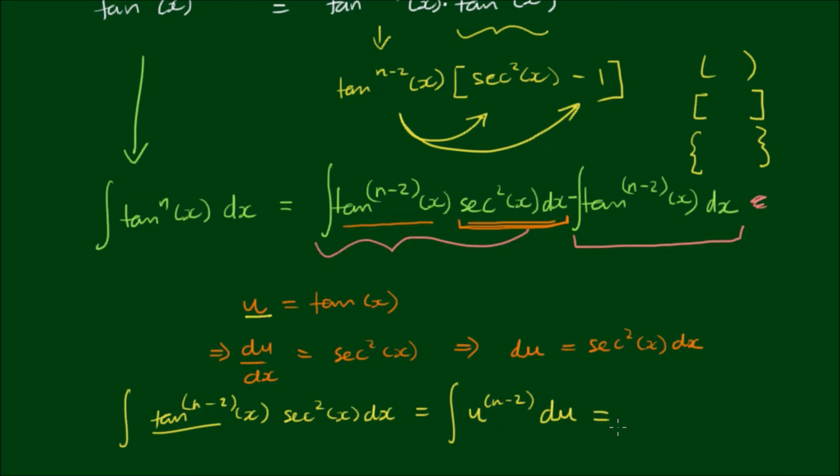Because u equals tan x with respect to u. And this is now we can just follow the power formula. Which of course we increase the power by 1. So n minus 2 plus 1. Well that just goes to n minus 1 divided by the new power n minus 1. Now of course we must not forget the integration constant c.